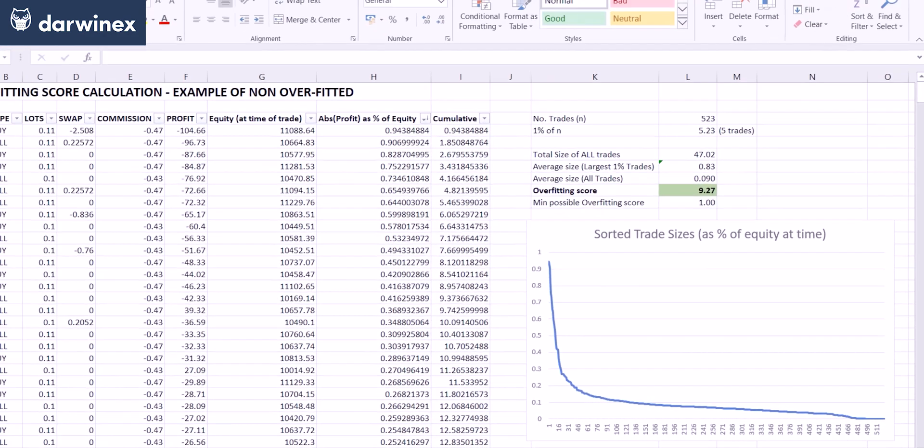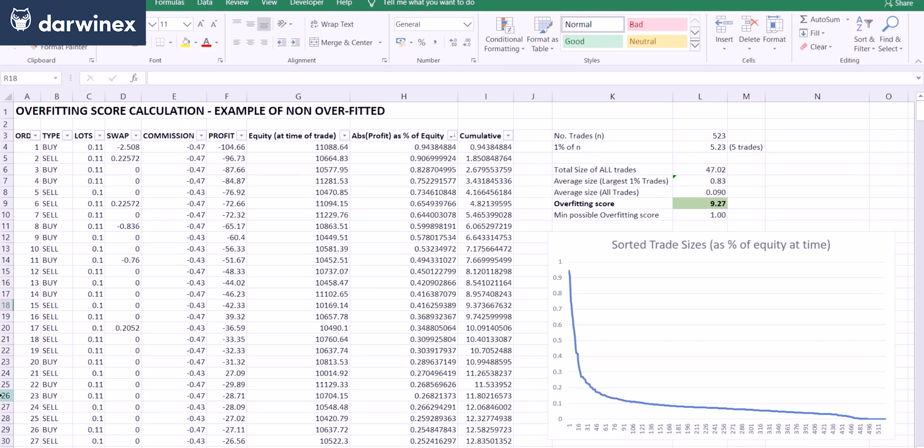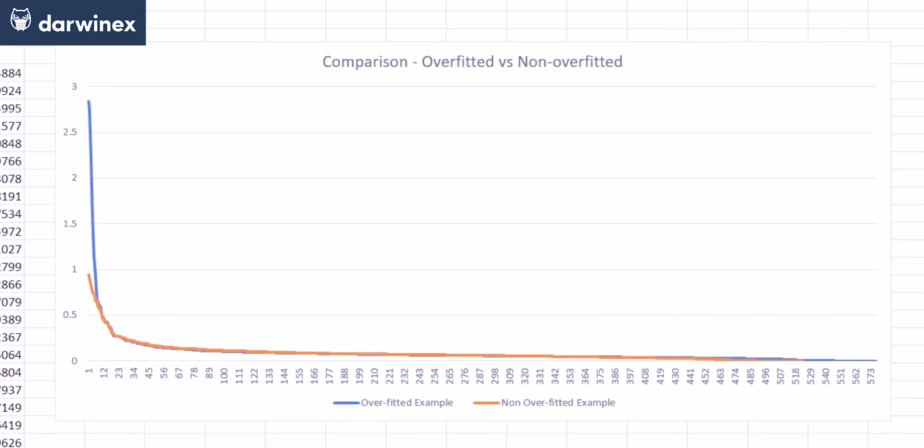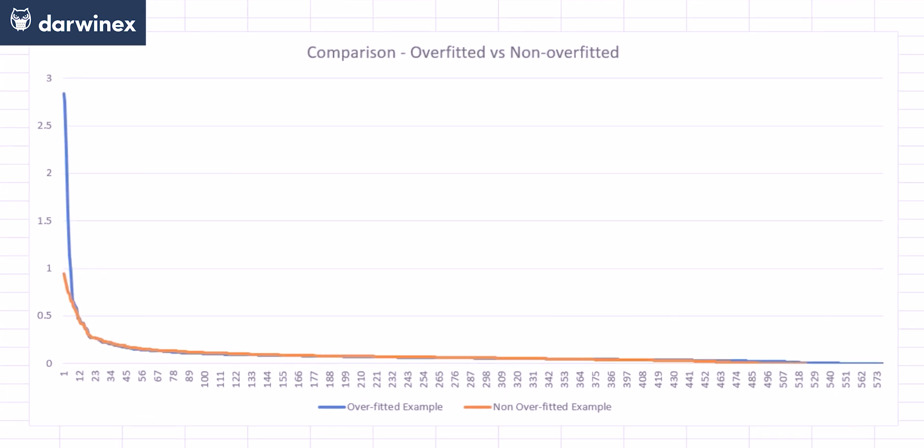Now when we look at each of the charts on their own they look fairly similar, but that's just because they have different scales on the y-axis. As soon as we overlay them we can see the difference. So the blue line here is the overfitted example, and the orange line is the non-overfitted example.